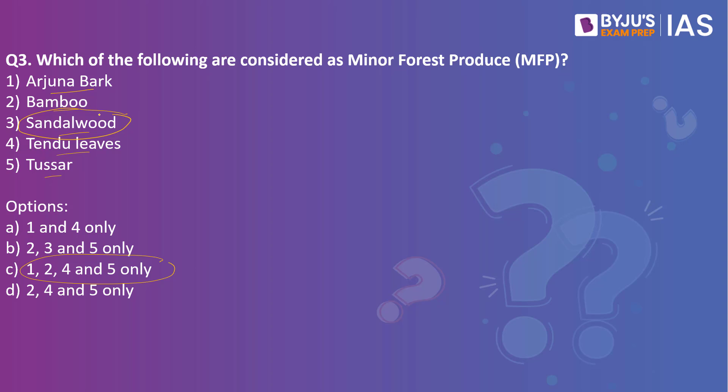Minor forest produce is an important source of income for tribal dwellers, who collect these products and sell them in the open market. An estimated 100 million people derive their livelihood directly from the collection and marketing of minor forest produce, and it also acts as a major source of nutrition for these communities.